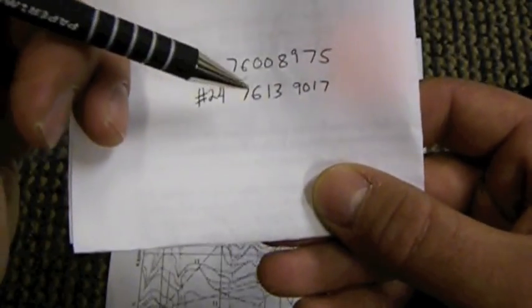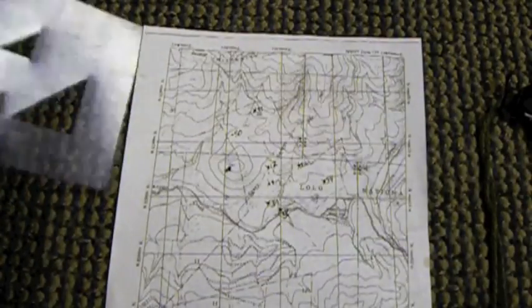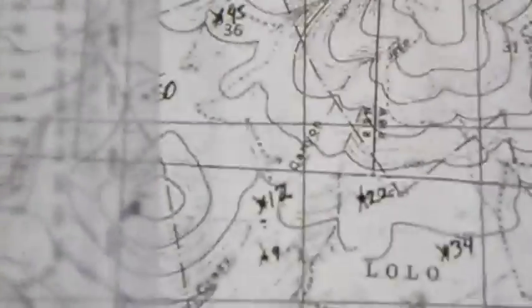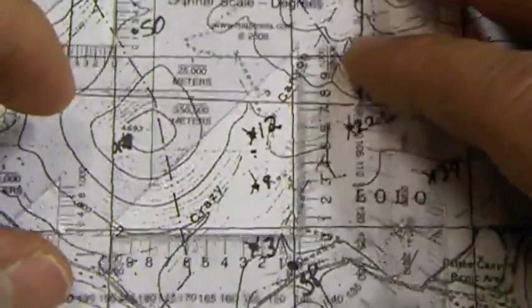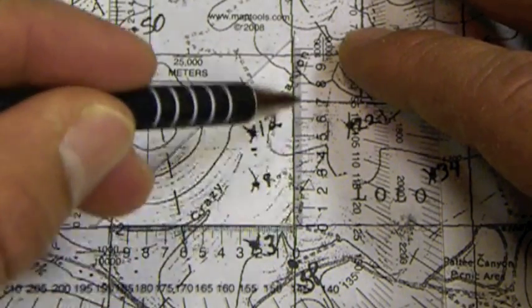Now we're going to work with 7613 inside of the grid square we just located. Take your protractor, making sure it is right side up so the words are legible on it. That's a common mistake. Go ahead and place it on the corner.